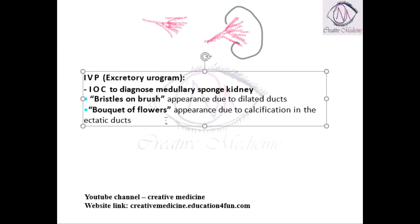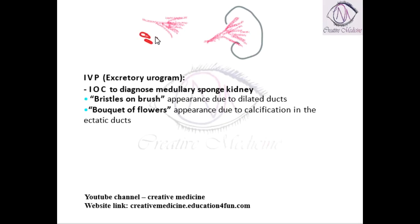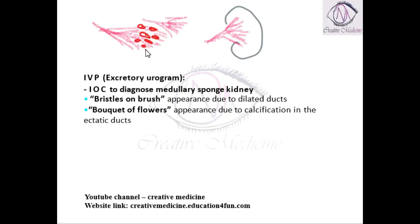The bristle brush appearance is due to dilatation of the ducts. A bouquet of flower appearance is also seen, and this is due to calcification of ectatic ducts. When calcification occurs around the ducts, it looks like a flower with the fluid appearing like a bouquet, so bouquet of flower appearance is seen.